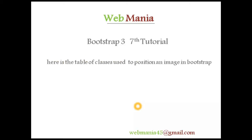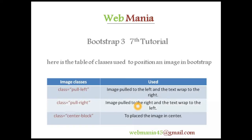Here is a table of classes used to position an image in Bootstrap. We have three classes. The first class is pull-left, which is used to pull the image to the left and the text wraps on the right. The next one is pull-right, where the image pulls to the right and the text wraps on the left. The last one is center-block, which is used to place the image in the center.